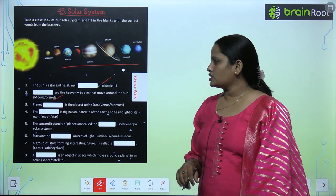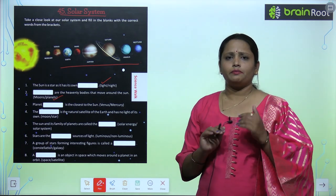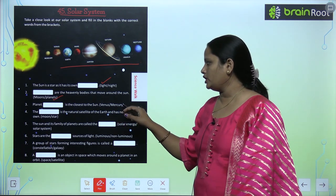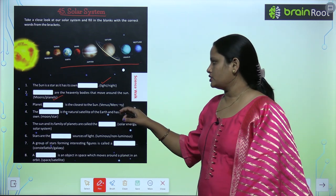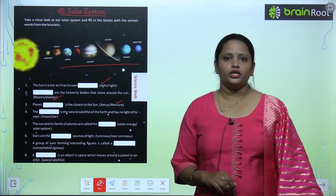Planet dash is the closest to the sun. Sun ke bohati paas hai yi vala planet. Mercury yaa phir Venus. So, it is Mercury.